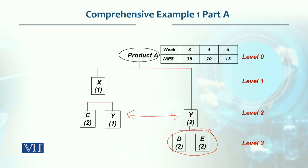Level 3 will come at the end. For product A, we need to remember that in week 3 we need 35 units, in week 4 we need 20 units, and in week 5 we need 15 units.